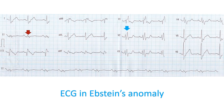The ECG in Epstein's anomaly shows an RSRS pattern in V2. Splintered polyphasic QRS complexes as seen in lead 2 are characteristic of Epstein's anomaly and are also called fragmented QRS. Sometimes supraventricular tachycardia may be documented on the ECG.